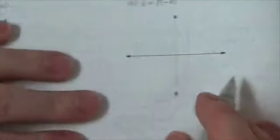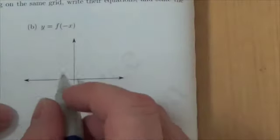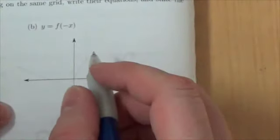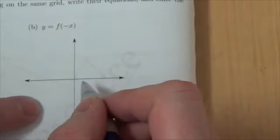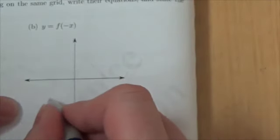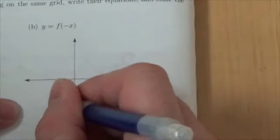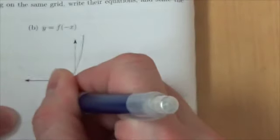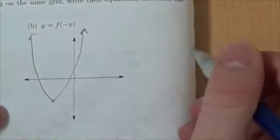Well first of all, y equals x plus 3 squared minus 2 is a quadratic that's been moved 3 to the left and 2 down, so it's down here looking something like this. You just need a rough sketch here.